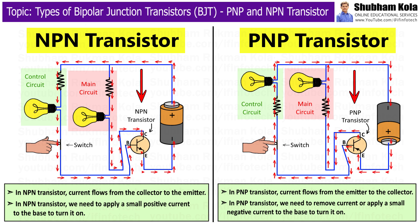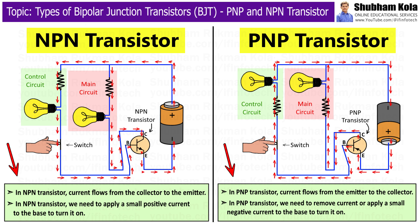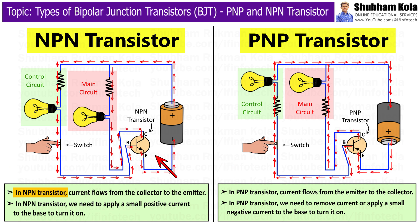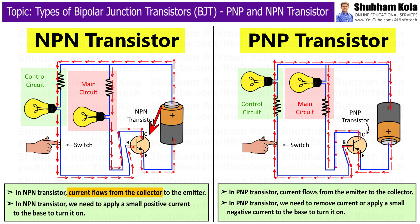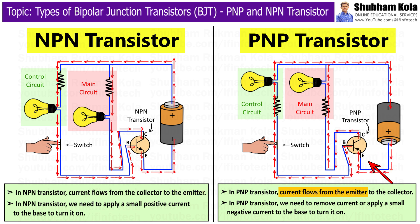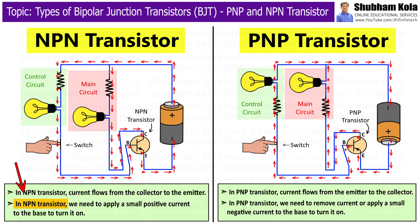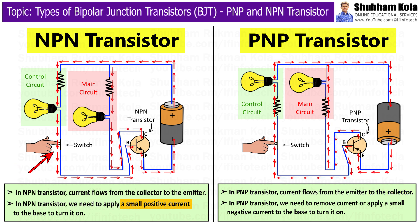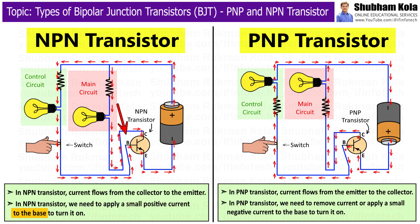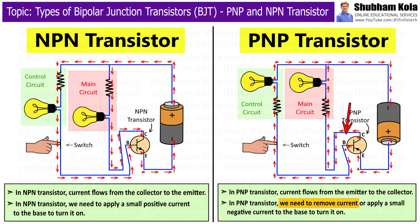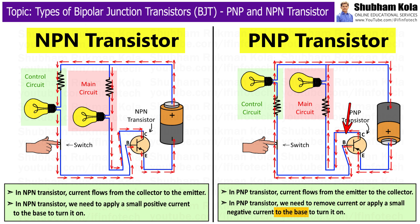Here is the key difference between the NPN transistor and PNP transistor. In an NPN transistor, current flows from the collector to the emitter, whereas in a PNP transistor, current flows from the emitter to the collector. In an NPN transistor, we apply a small positive current to the base to turn it on, whereas in a PNP transistor, we remove current or apply a small negative current to the base to turn it on.